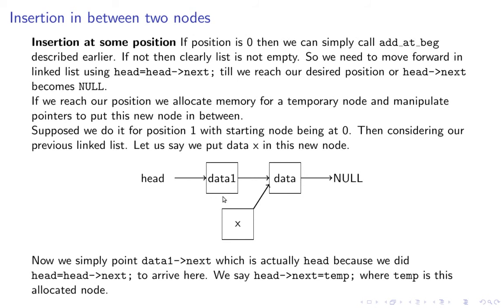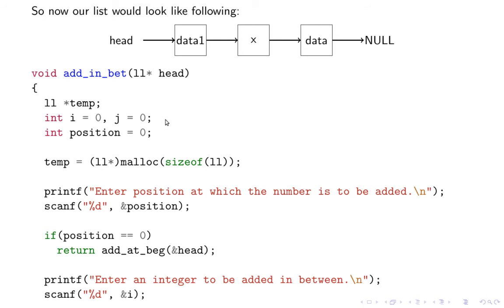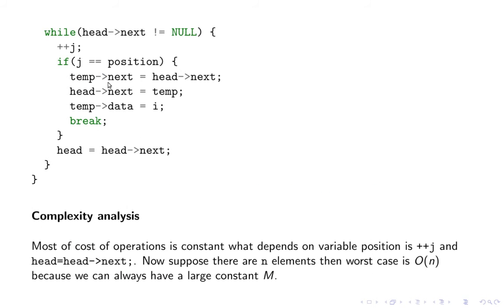Let's see the code. If position is zero, we go to add at beginning. Otherwise, what we do is iterate while head->next is not equal to null. We do ++j, and if j is equal to position - so in this case, position is one in our case.